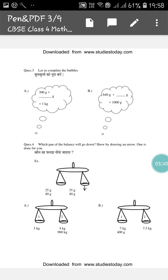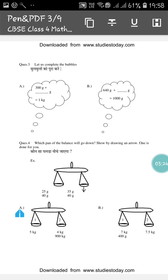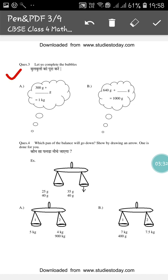Now I will go to the next page. Here question number 3 is: complete the bubbles. You can see — 300 gram plus blank gram will be 1 kg, you have to fill the blank. Next one is 640 gram plus blank gram will be 1000 gram, you have to fill it and complete it.